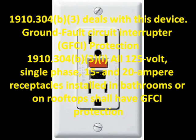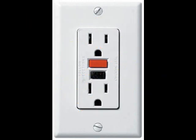A very common and very important safety device is the GFCI receptacle. Section 1910.304(b) deals with this device. The ground fault circuit interrupter, or GFCI, should be all 125-volt, single-phase, 15 and 20-ampere receptacles installed in bathrooms or on rooftops. You can see a picture of a GFCI on the screen. A GFCI receptacle limits the amount of time a person is exposed to the current from an electrical shock — it does not prevent electrical shock. This is a common misconception.